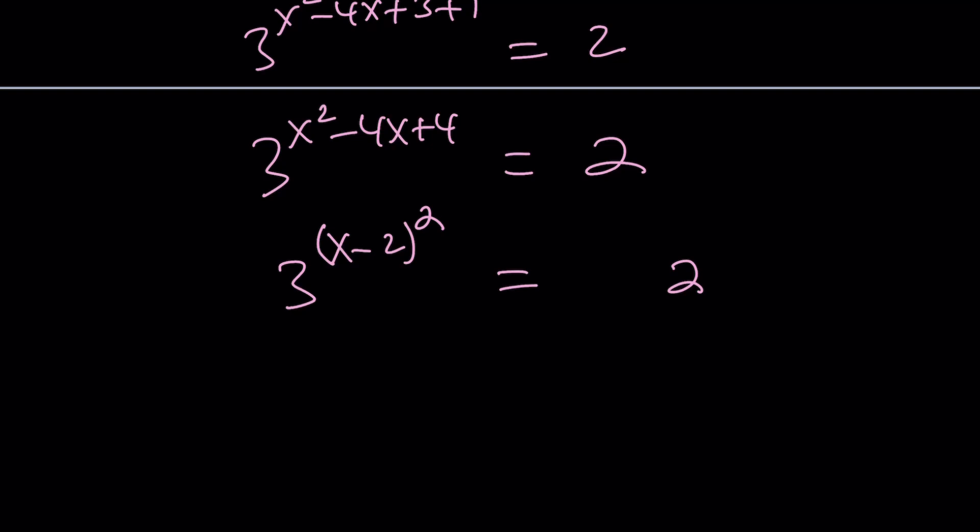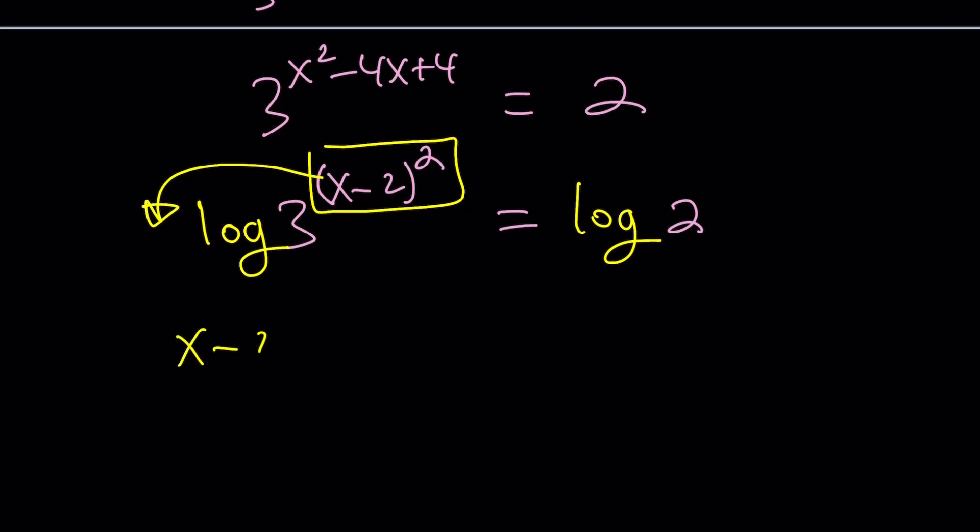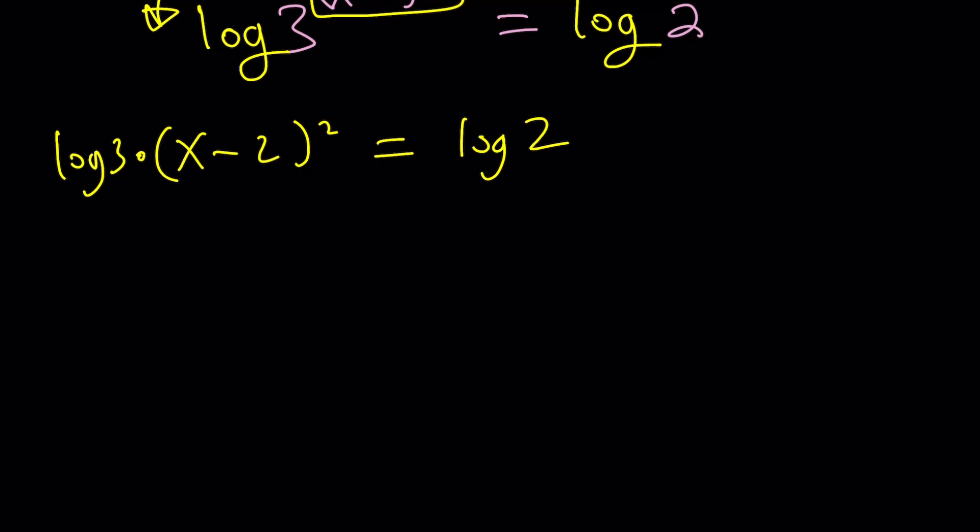And in this case, again, you can use base 10 or ln. Or you can use base 3. Doesn't matter. Let's just use log to be consistent. And now we're going to get something like this. And now this should be able to move to the front. And now we're going to get x minus 2 squared equals log 2 divided by log 3. And that should almost give me the answer.